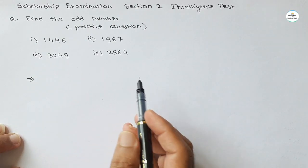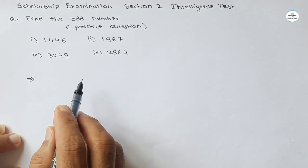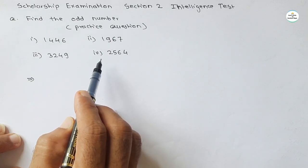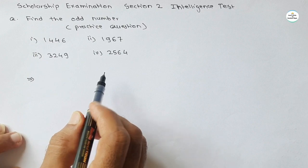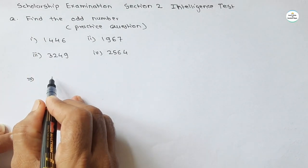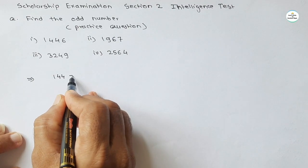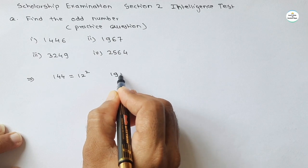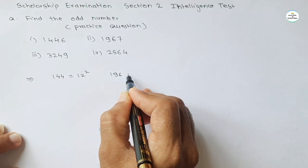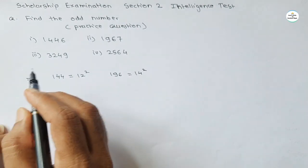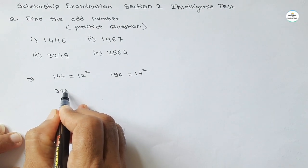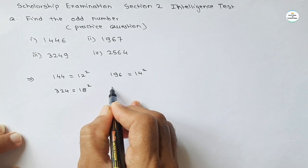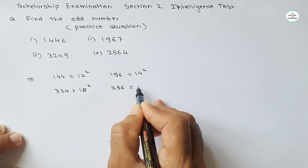Look carefully at all four numbers. You will find that the first digits of the numbers are perfect squares. In the first number, 144 is a perfect square — it is the square of 12. For the second number, 196 is a perfect square — it is the square of 14. Then 324 is a perfect square — it is the square of 18. And 256 is a perfect square — it is the square of 16.